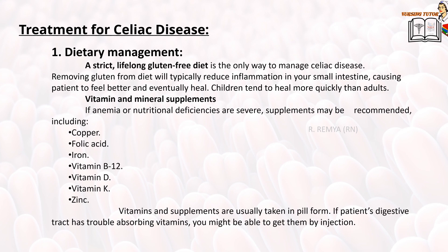Vitamin and mineral supplements: if anemia or nutritional deficiencies are severe, supplements may be recommended including copper, folic acid, iron, vitamin B12, vitamin D, vitamin K, and zinc. Vitamins and supplements are usually taken in pill form. If the patient's digestive tract has trouble absorbing vitamins, they might be able to receive them by injection.